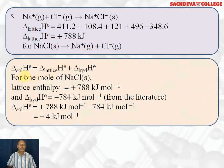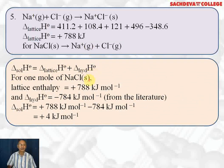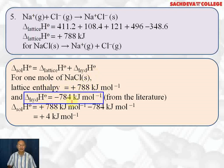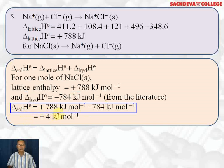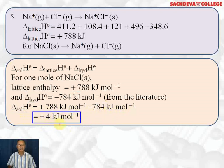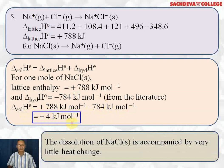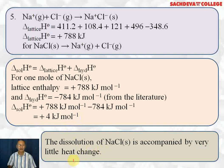If we want to find delta H of solution, it will be delta H lattice plus delta H hydration. Hydration energy is mostly exothermic. For one mole of NaCl solid, lattice enthalpy is plus 788 kilojoules per mole and hydration enthalpy is minus 784 kilojoules per mole, so delta H of solution equals plus 788 minus 784 = plus 4 kilojoules per mole. This means dissolution of NaCl is endothermic but involves very little energy change.